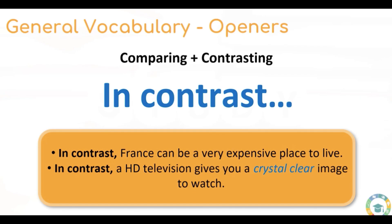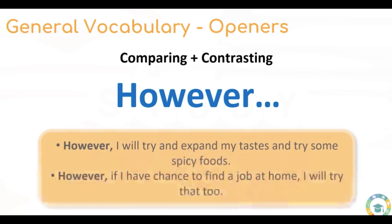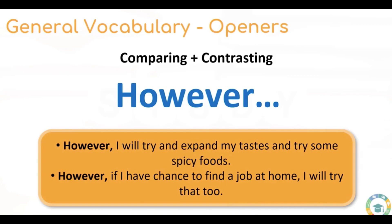Our final opener is 'However' — a really great way to show contrast in thinking. For example: 'However, I will try and expand my tastes and try some spicy foods.' And: 'However, if I have the chance to find a job at home, I will try that too.' So our final opener for comparing and contrasting is 'However.'